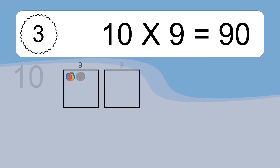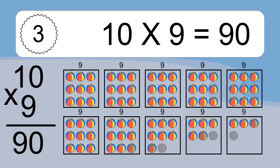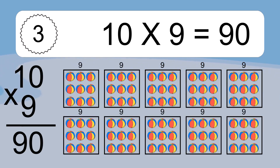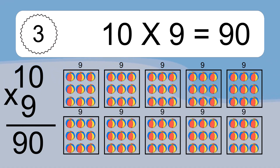10 times 9 equals what? 10 times 9 equals 90. We have 10 boxes, and each box has 9 colorful balls inside. If you count all the balls in all the boxes together, you will have 10 times 9 balls. This equals 90 balls.